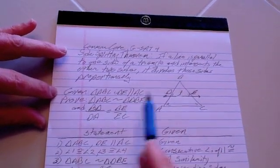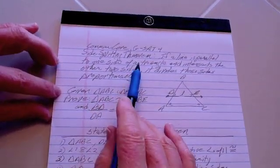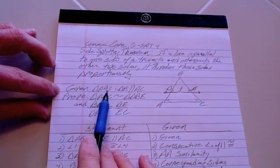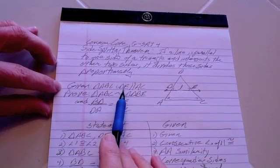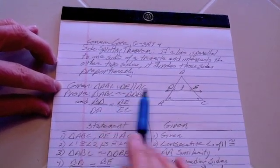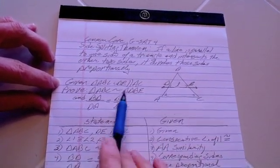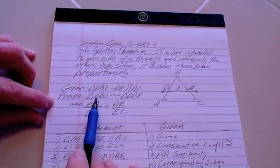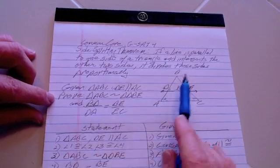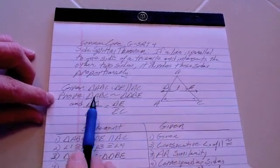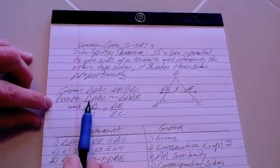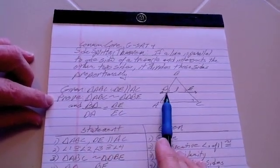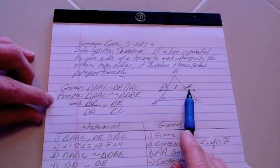So our statement here now is that based on this theorem, how do we prove that? First, given is that we have triangle ABC and line DE is parallel to the segment AC. What we've got to prove now is that in order to find out that if these lines are proportional, we have to first prove that triangle ABC is similar to DBE.